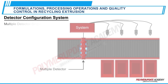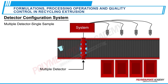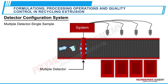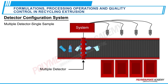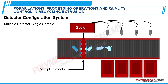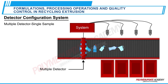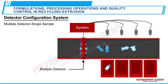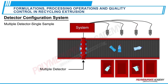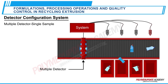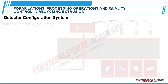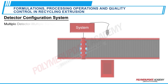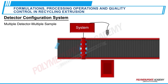In a multiple detector single sample setup, each container passes the detector assembly and is read by a number of detectors, resulting in a more accurate reading.